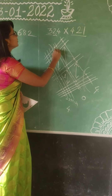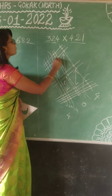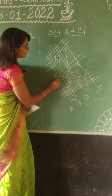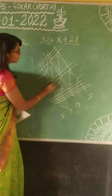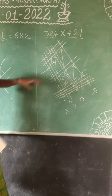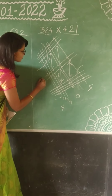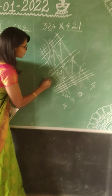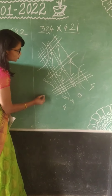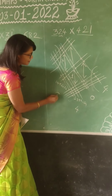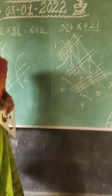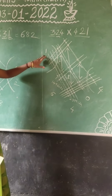Now counting: 1, 2, 3, 4, 5, 6, 7, 8, 9, 10, 11, 12, 13, 14. And plus this — 15, 16. So 14 plus 2 is equal to 16. We are keeping 6 here and we are taking 1 above as carry.